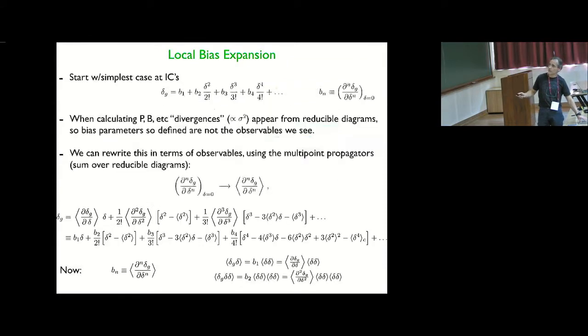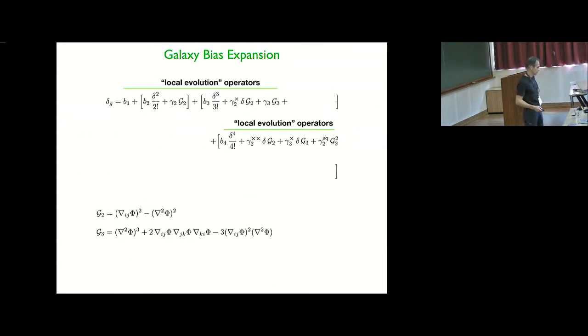Now, this was for the case where everything is local in density, in density fluctuations, so you only have powers in delta. But in reality, the galaxy bias expansion is more complicated because, as I said at the beginning, the operators that are allowed are local in the second derivatives of the potentials.